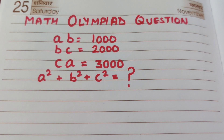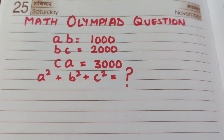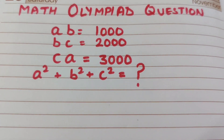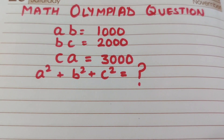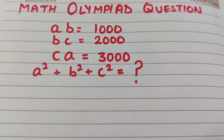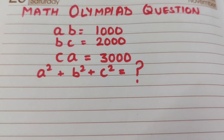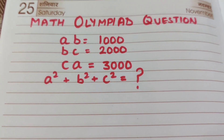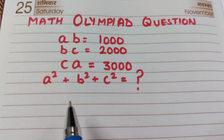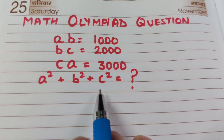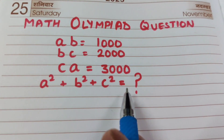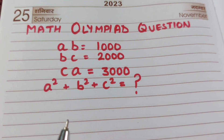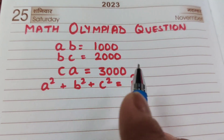This is a Math Olympiad question. Given AB equal to 1000, BC equal to 2000, and CA equal to 3000, what is the value of A squared plus B squared plus C squared? This is how we solve it.